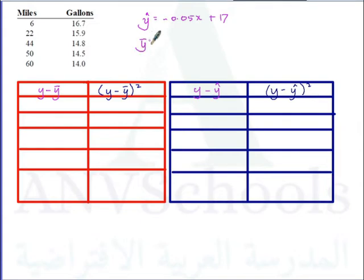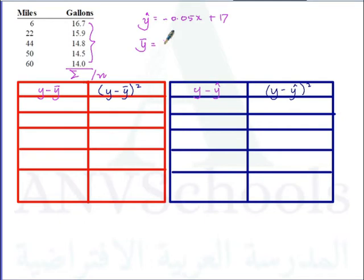First we need to find the mean. The mean is the sum of all y-values divided by n. We have five data points, so our mean y-bar is equal to 16.7 plus 15.9 plus 14.8 plus 14.5 plus 14.0, divided by 5, which gives us 15.18 gallons.